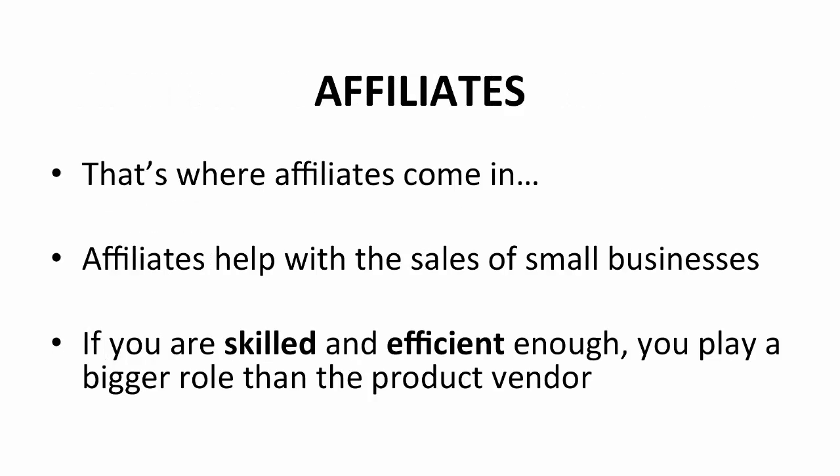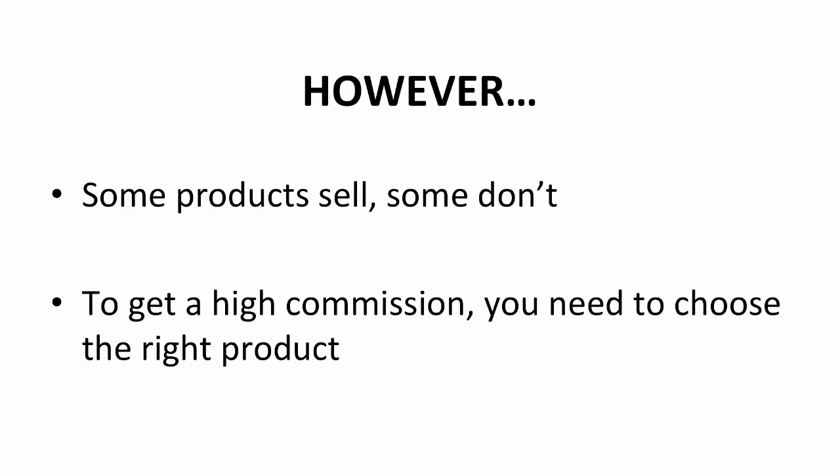This is where affiliates come in. Affiliates help with the sales of small businesses. They promote and put certain products on the map. And if you're skilled and efficient enough, you'll play a bigger role than the product vendor in generating sales. They would depend on you to bring in the buyers. However, some products sell and some don't. That has always been how business works. If you choose the wrong product, you will not earn as much as you would expect. So how do you avoid making this mistake? By having a set of criteria, of course.